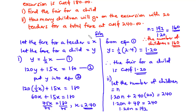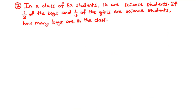Now let's solve our second question. This is NOVDECK 2014, question 6a: In a class of 52 students, 16 are science students. If one third of the boys and one fourth of the girls are science students, how many boys are in the class?